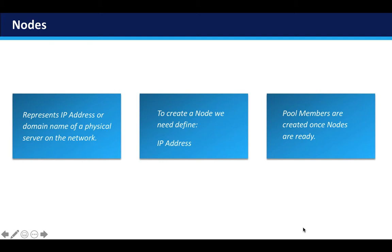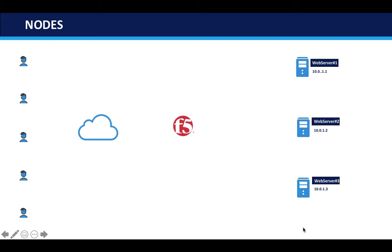Enough theory. Let's see how it looks and then jump in and create the nodes. This is how our lab looks. All these servers fall under the network 10.0.1.0/24 — and these are all the node IP addresses. It is assumed that these servers are already configured with the desired IP address, and we can then go ahead and create the nodes accordingly.